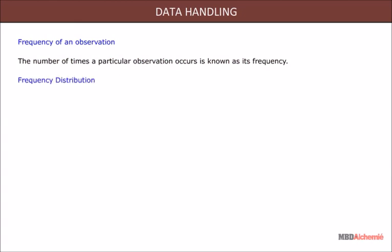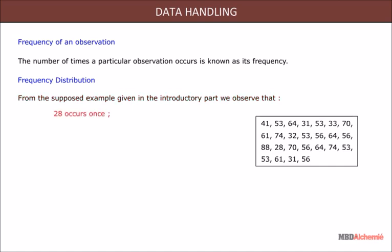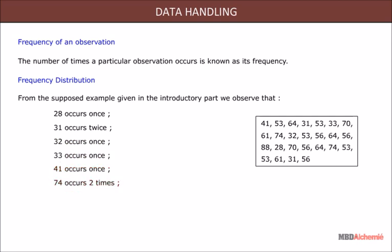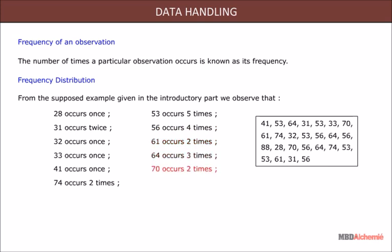Frequency: the number of times a particular observation occurs is known as its frequency. Frequency distribution: from the given example, we observe that 28 occurs once, 31 occurs twice, 32 occurs once, 33 occurs once, 41 occurs once, 74 occurs two times, 53 occurs five times, 56 occurs four times, 61 occurs two times, 64 occurs three times, 70 occurs two times, and 88 occurs once.